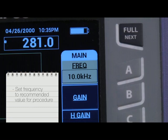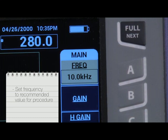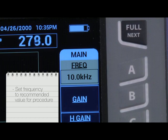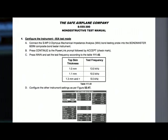Set the frequency to the value recommended by the inspection procedure. For this video, we will use the default value of 10 kHz. Set any other parameters as needed if required by the procedure.